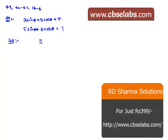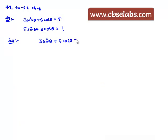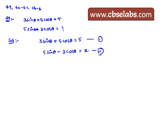Here, the question is that 3 sin θ plus 5 cos θ is equal to 5. We need to find the value of 5 sin θ minus 3 cos θ. Let us assume that value is equal to some x. Let this be as two equations, and let us square both equations and add them.